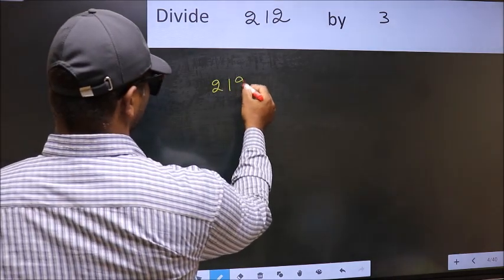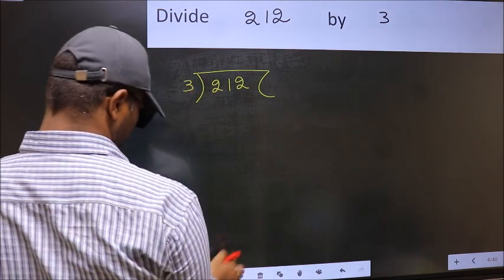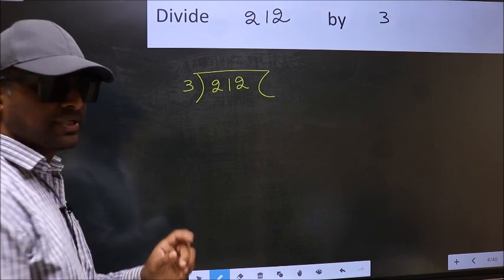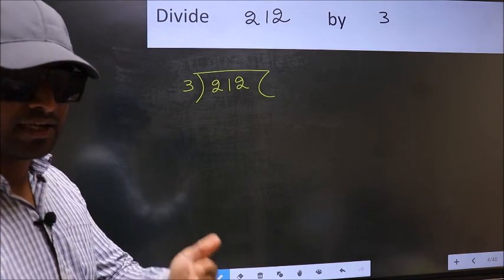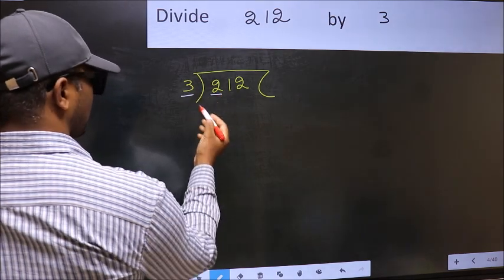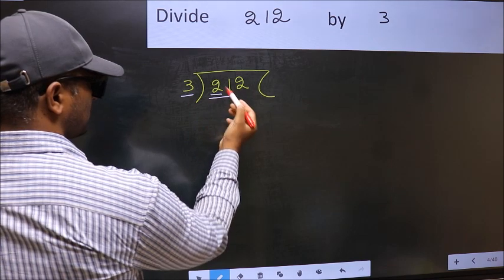212 divided by 3. This is your step 1. Next, here we have 2 and here 3. 2 is smaller than 3, so take 2 numbers: 21.